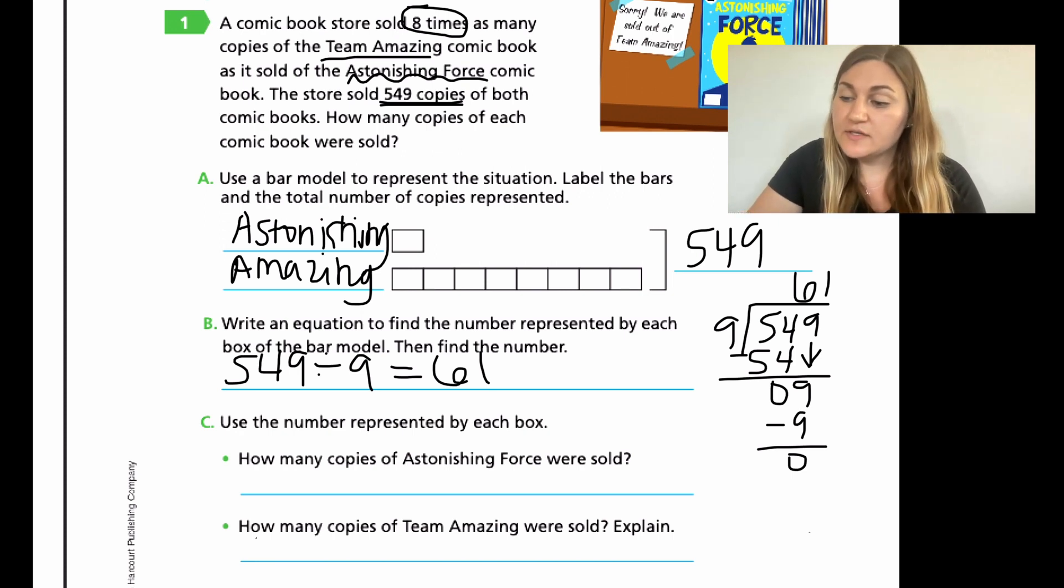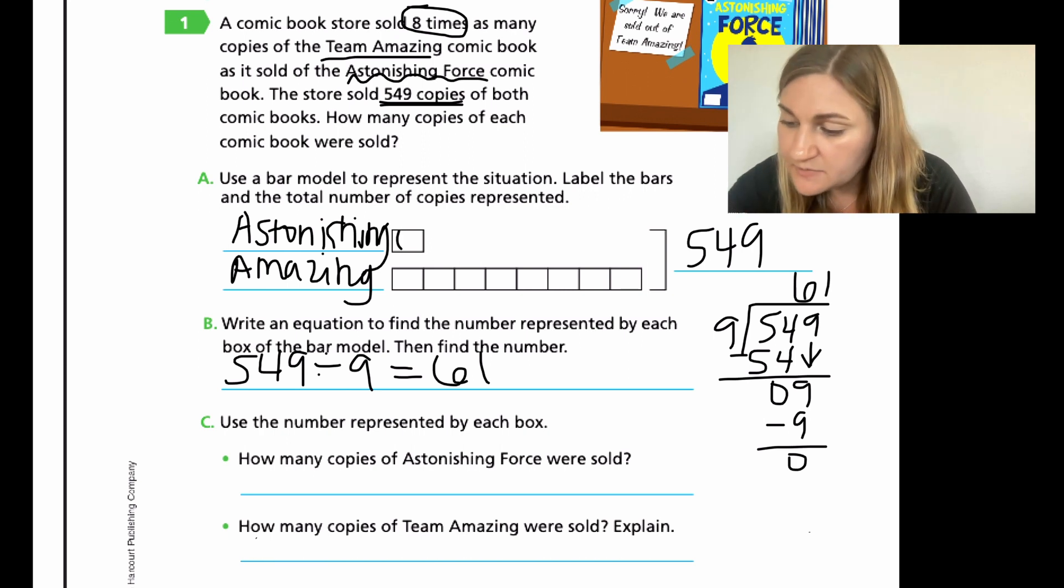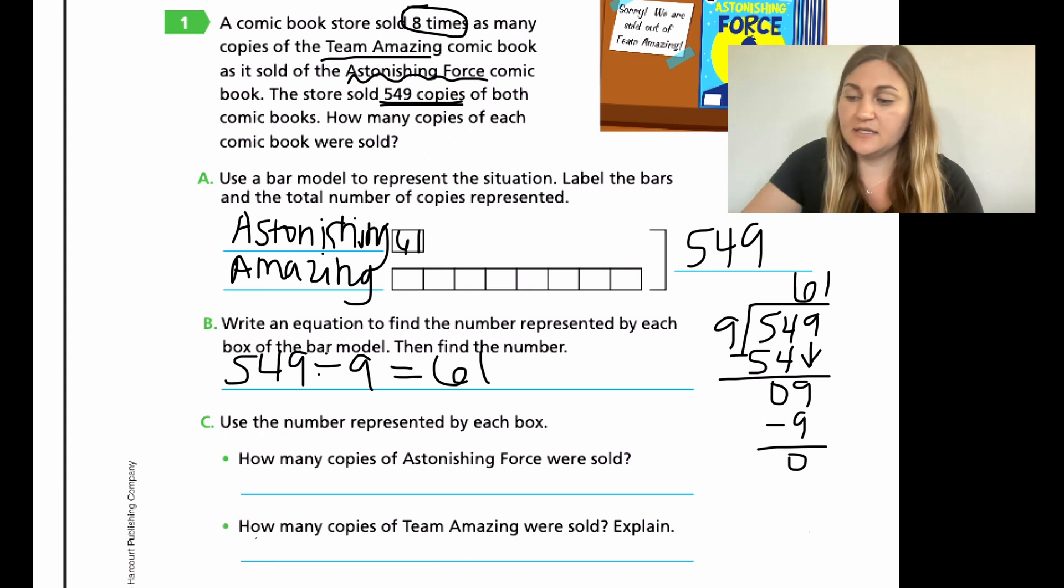So part C, use the number represented by each box. We just found out that each box is worth 61. So what I'm going to do is I'm just going to write 61 next to the Astonishing box, just as a reminder. The bullet point underneath C says how many copies of Astonishing Force were sold. It's a good thing I made that note. So Astonishing Force had one box and we figured out that one box is equal to 61 copies. So how many copies? 61.